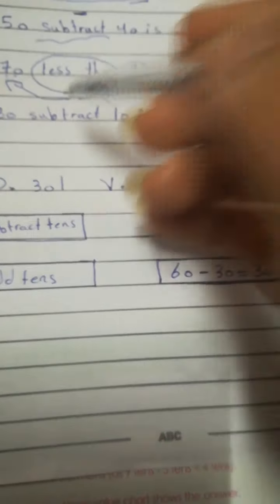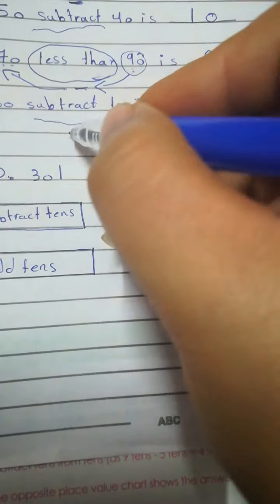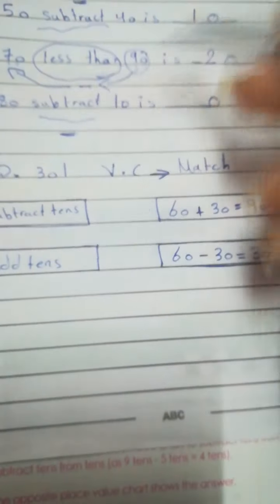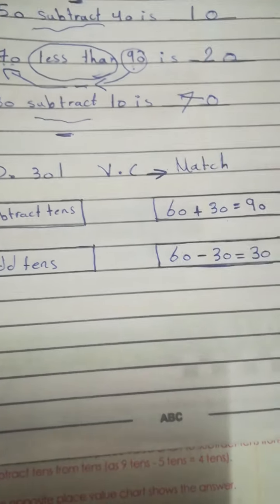80 subtract 10. Subtract means minus. 80 minus 10. 0 minus 0 is 0. 8 minus 1 is 7. So, 70.